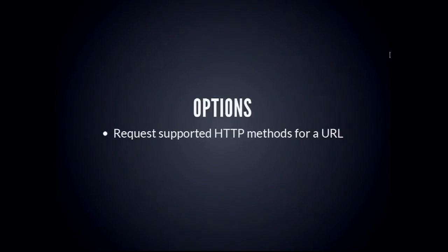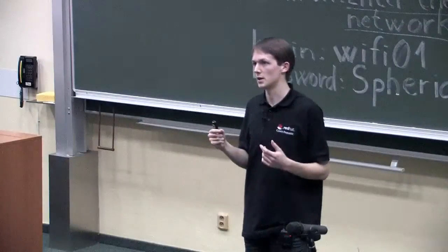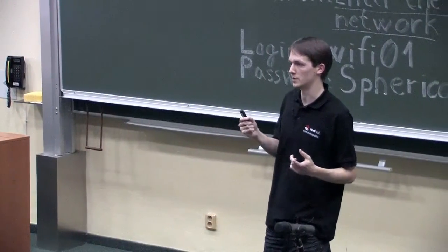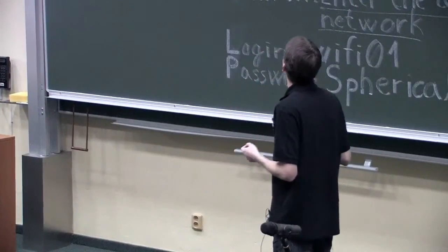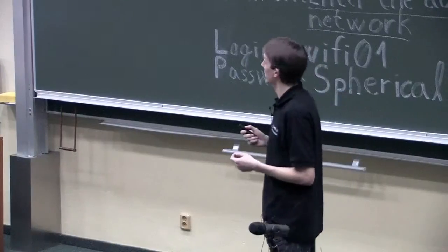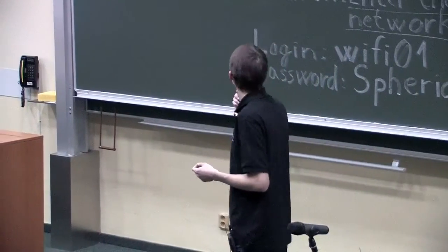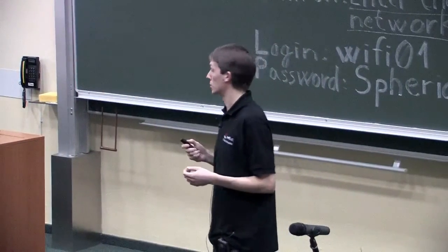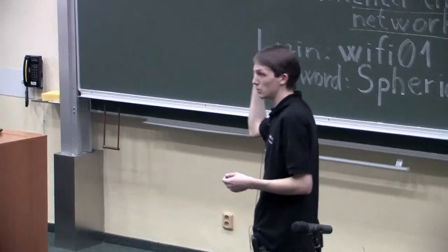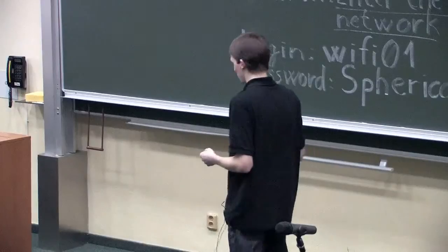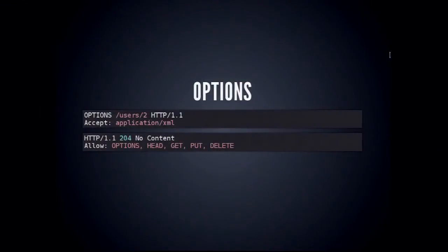OPTIONS is the last method type. When you're not sure what methods are supported for a given URL, you issue an OPTIONS request and get back 200 OK with an Allow header listing all the HTTP methods you can use on that URL.